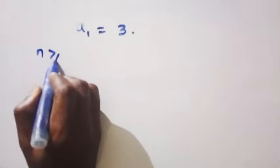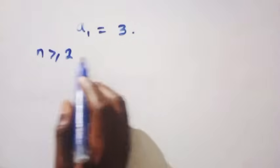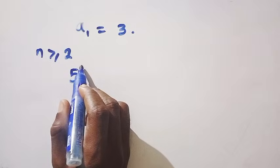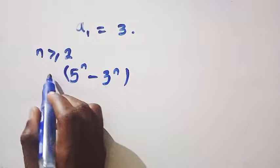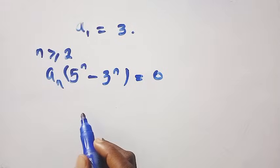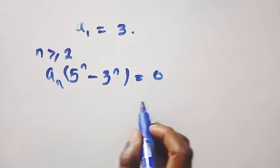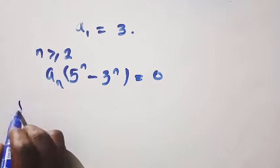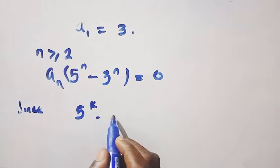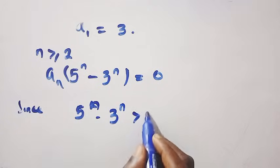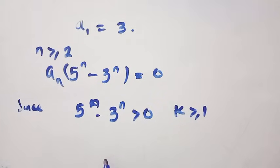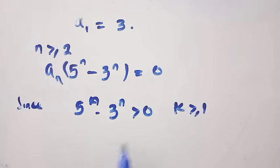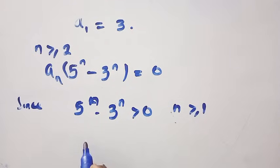And if n is greater than or equal to 2, then the factor (5^n minus 3^n) multiplied by a_n must equal 0. Since on the right-hand side every coefficient for powers 2 and above is 0, and since (5^n minus 3^n) is greater than 0 and non-zero when n is greater than or equal to 1, it follows that all higher-order coefficients must be zero.